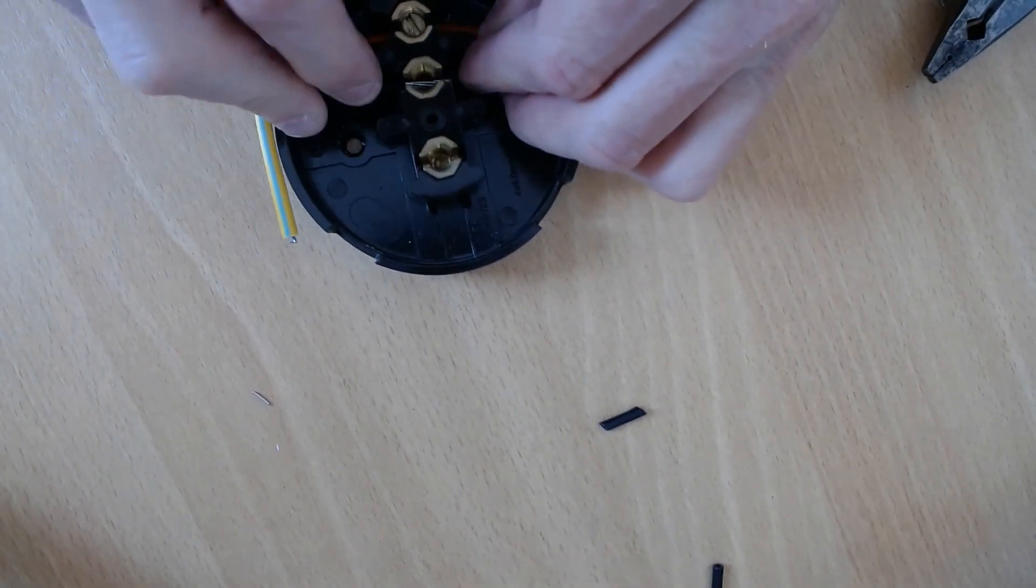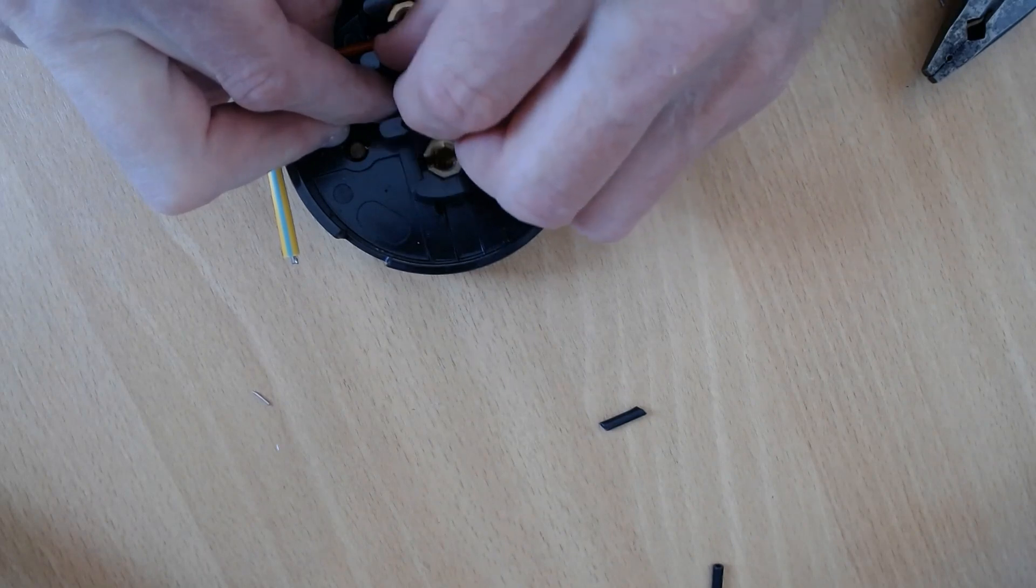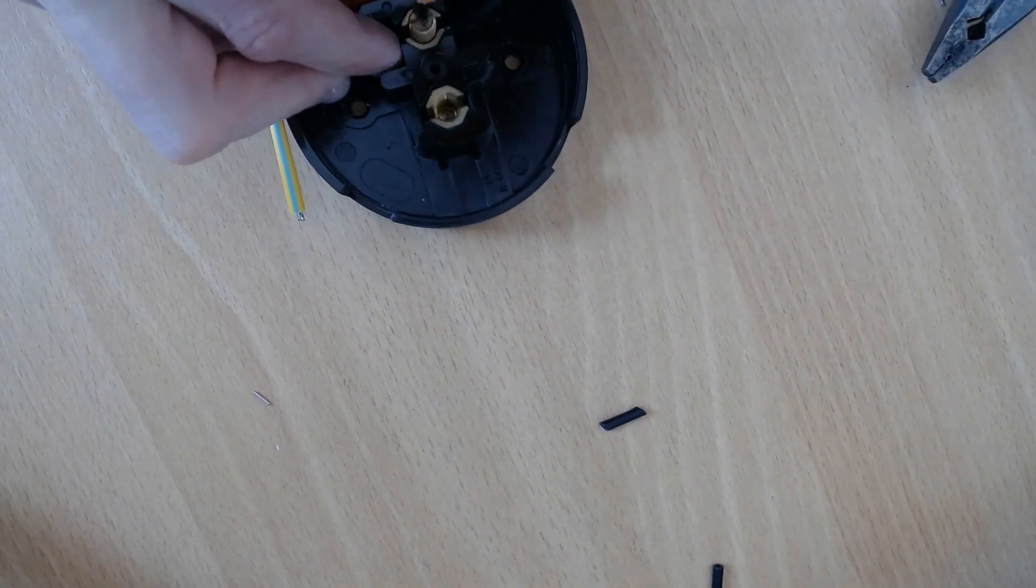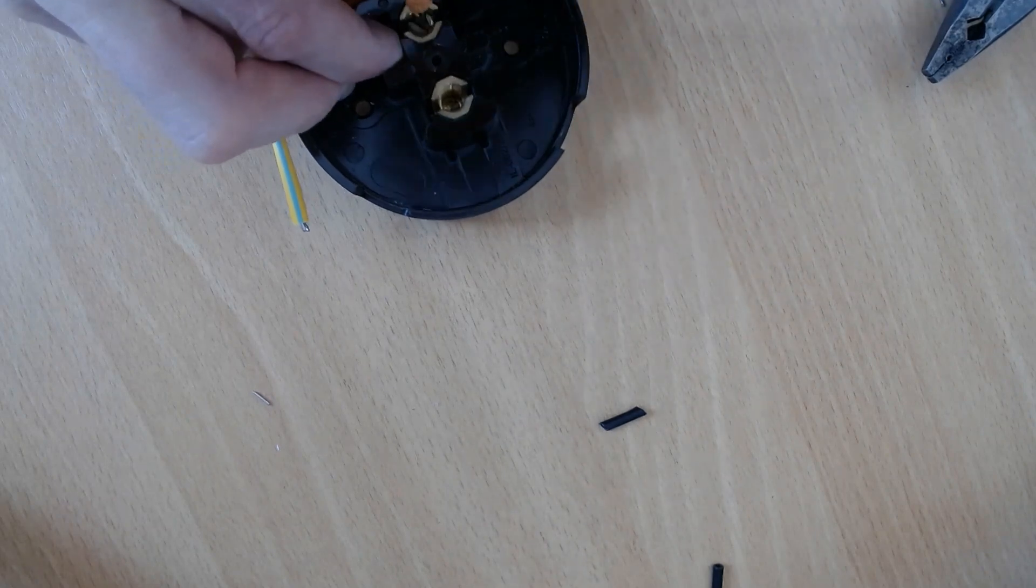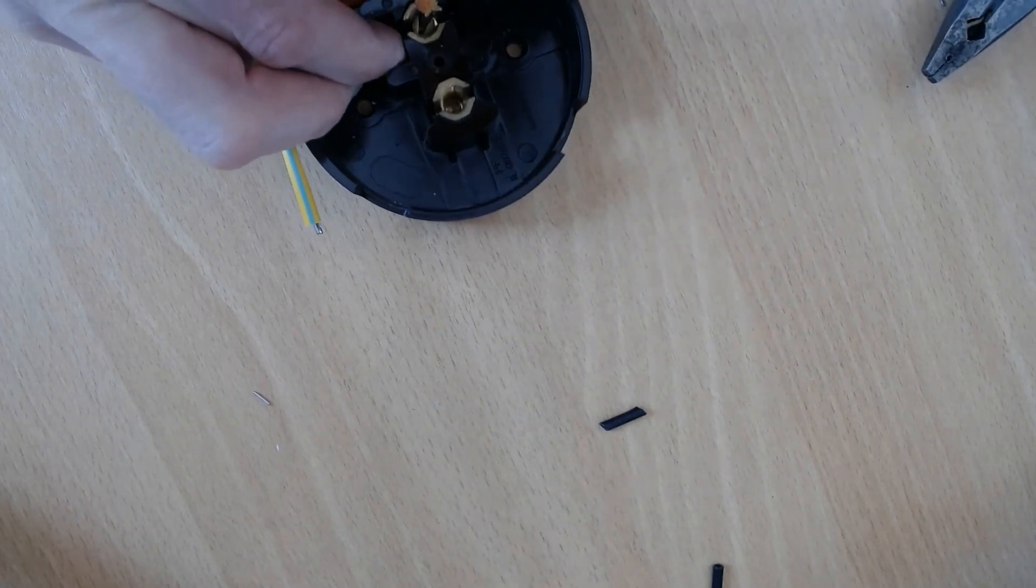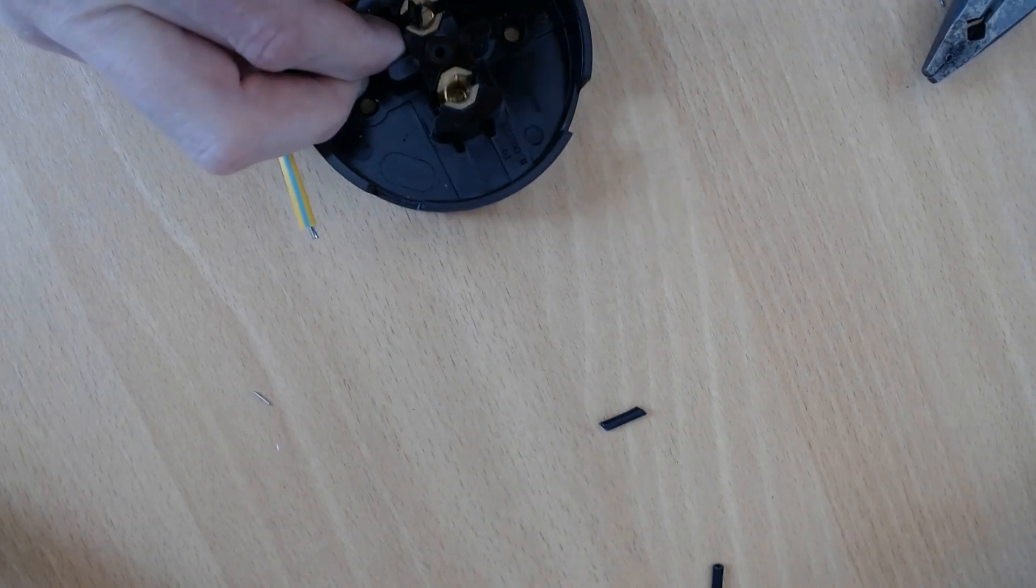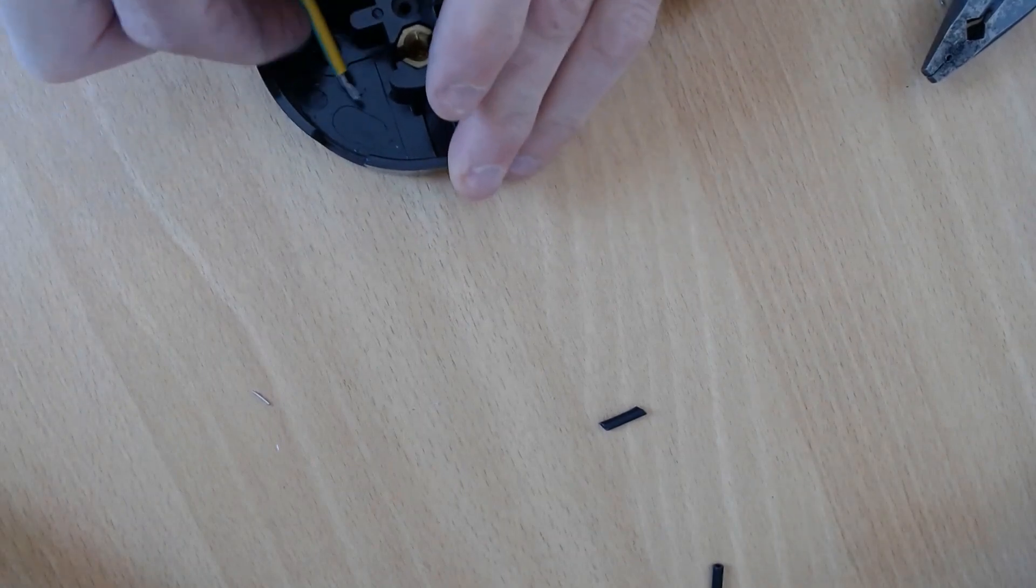Do the neutral the same. Push it in like that. Again, the same thing. Tight, not so tight you break the junction box, but tight enough.